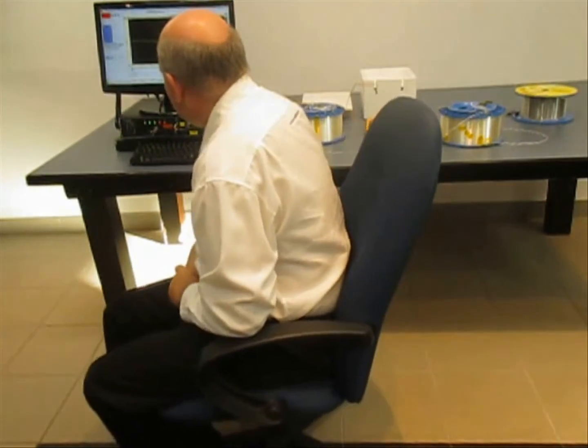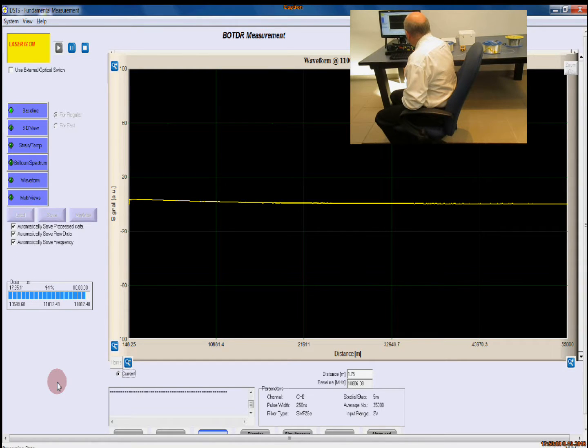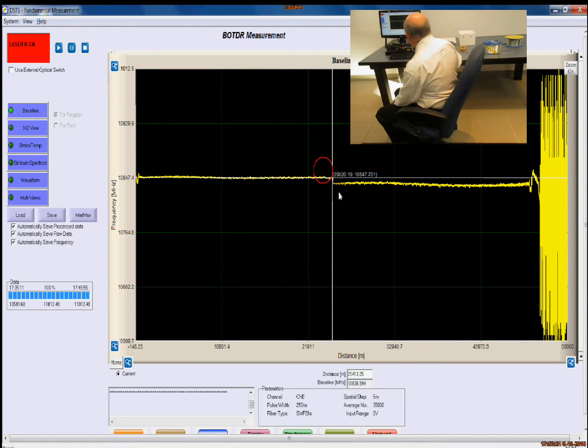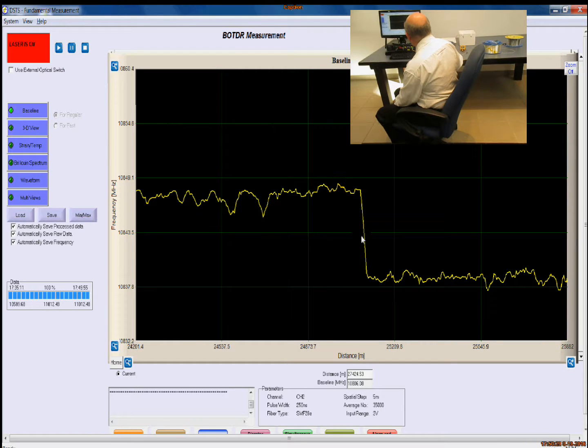Now it's analyzing the data. It only takes about half a minute for it to get the analysis done. Once it's completed, it will display for us the complete baseline measurement. You can see quite clearly in the middle the transition from one fiber to the other. If we zoom in onto that feature, you have a pretty abrupt transition from one fiber to the next.